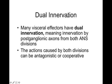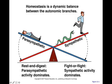Most organs in the body are dually innervated by both the parasympathetic and sympathetic systems. There's dynamic antagonism — each system opposes the effect of the other. So if the sympathetic nervous system does one thing to the heart, the parasympathetic nervous system does the other. Because each organ receives dual input, these actions can be antagonistic, though sometimes they can be cooperative. Most of the time they're antagonistic.